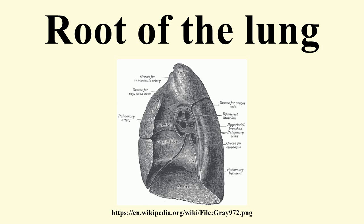The chief structures composing the root of each lung are arranged in a similar manner from the front to the back on each side. This means that the upper of the two pulmonary veins are in front, the pulmonary artery is in the middle, and the bronchus and bronchial vessels are behind. The arrangement on the two sides is not symmetrical.